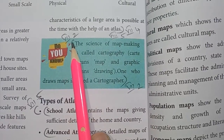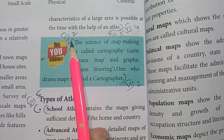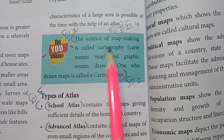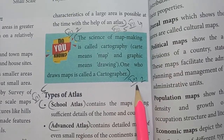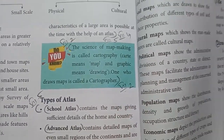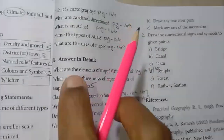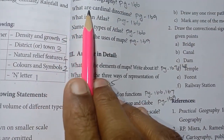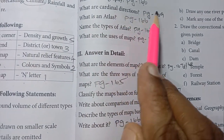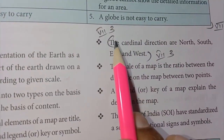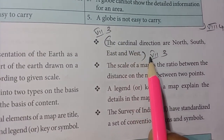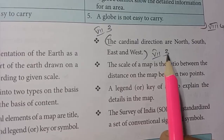The science of map making is called cartography — refer to the paragraph. 3rd one: what are cardinal directions? — page number 169. Cardinal directions — refer to the wrap-up on the right side.